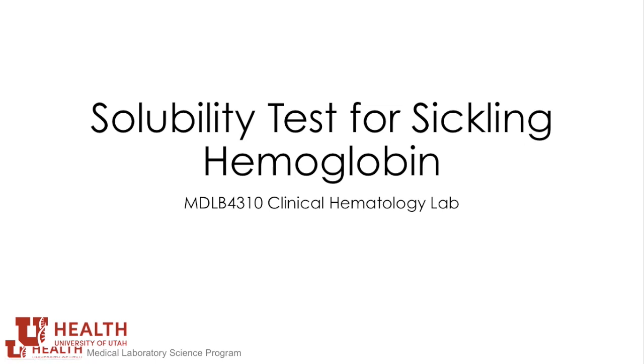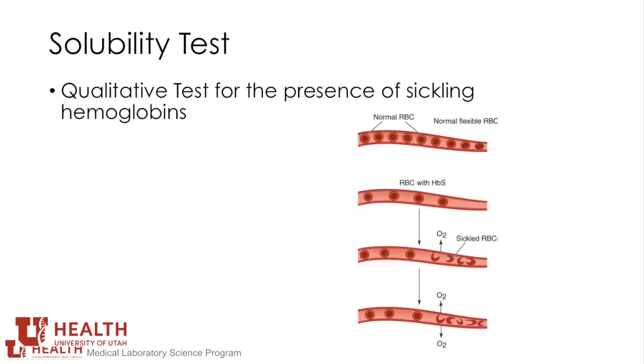Solubility Test for Sickling Hemoglobins. Deoxygenated hemoglobin S is insoluble in the presence of a concentrated phosphate buffer solution and forms a turbid suspension that can be easily visualized using a solubility reading card.